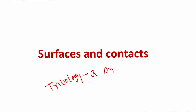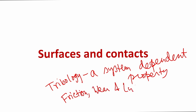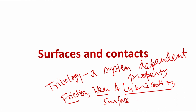Tribology is essentially a system dependent property, and most of the elements of tribology like friction, wear, and lubrication — these are the three pillars of tribology. Friction is one pillar, wear is another pillar, and the third pillar is lubrication. These are surface dominated properties. Friction between two mating solids is essentially governed by physico-chemical interactions between the asperities of the two mating solids.